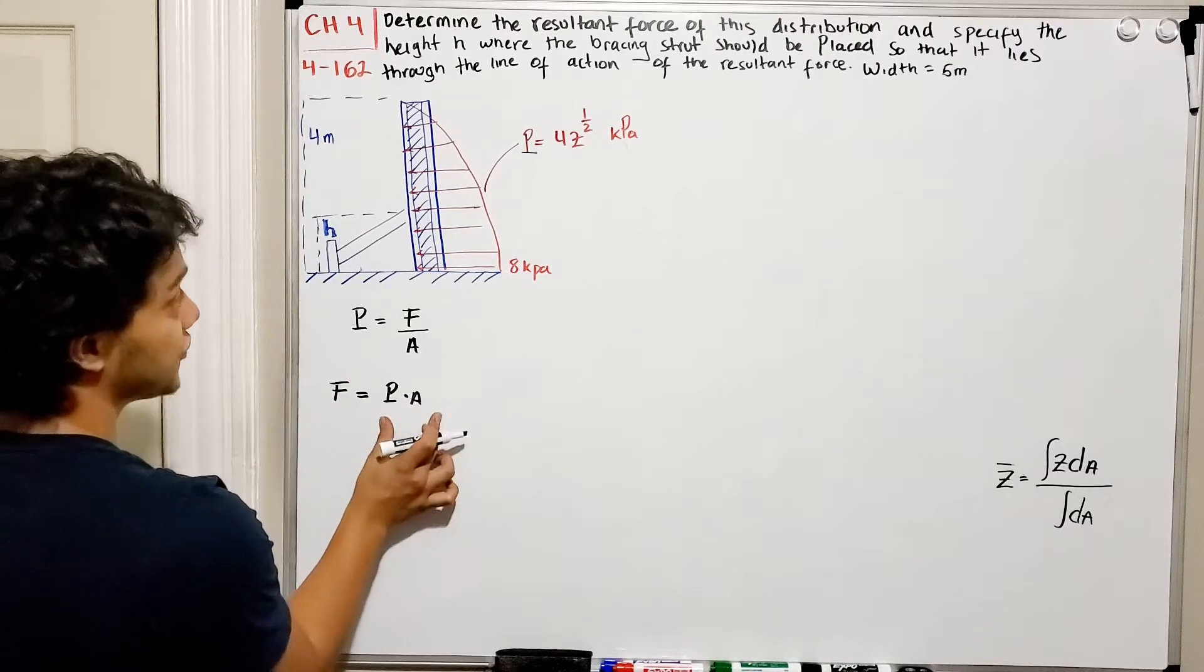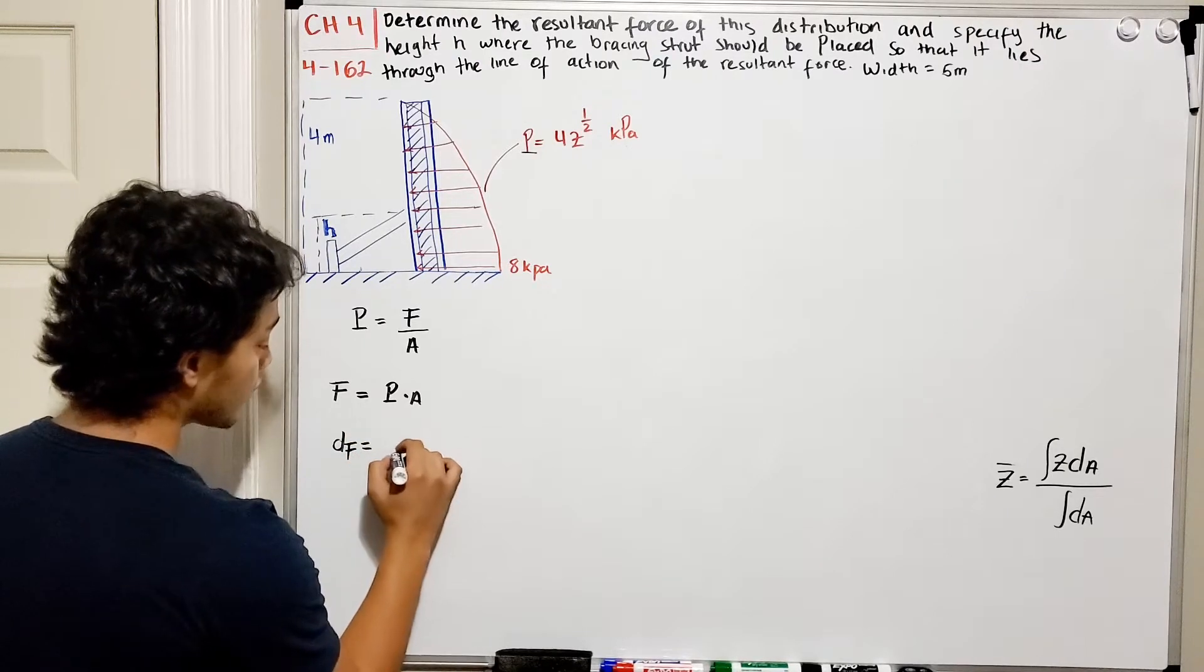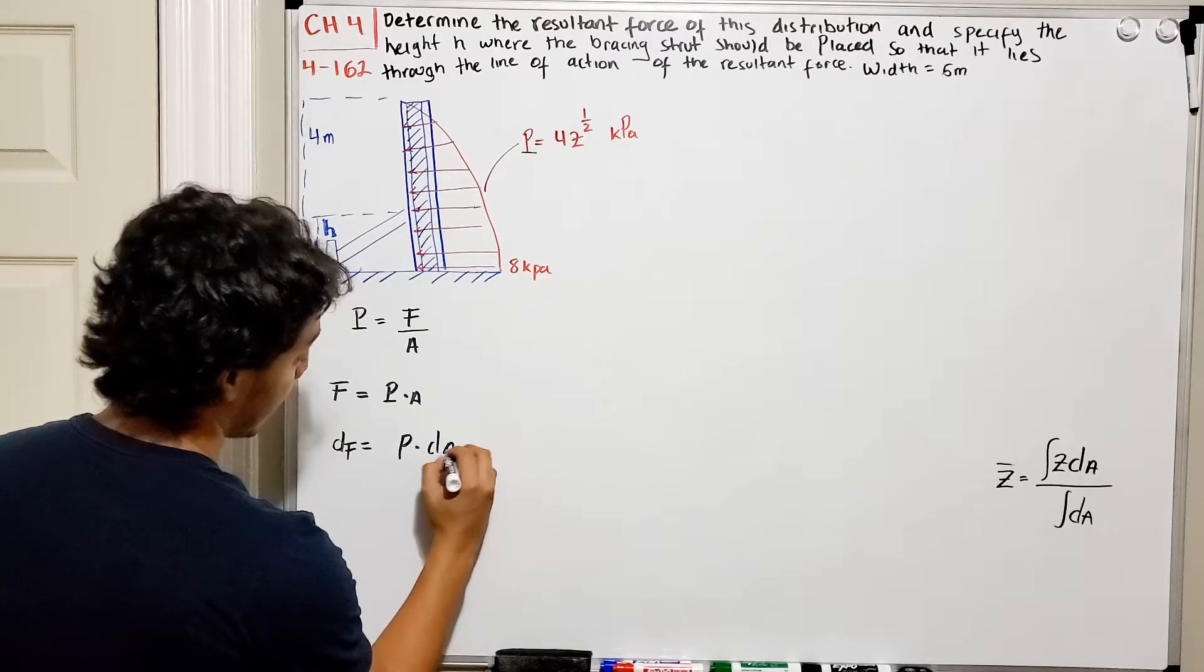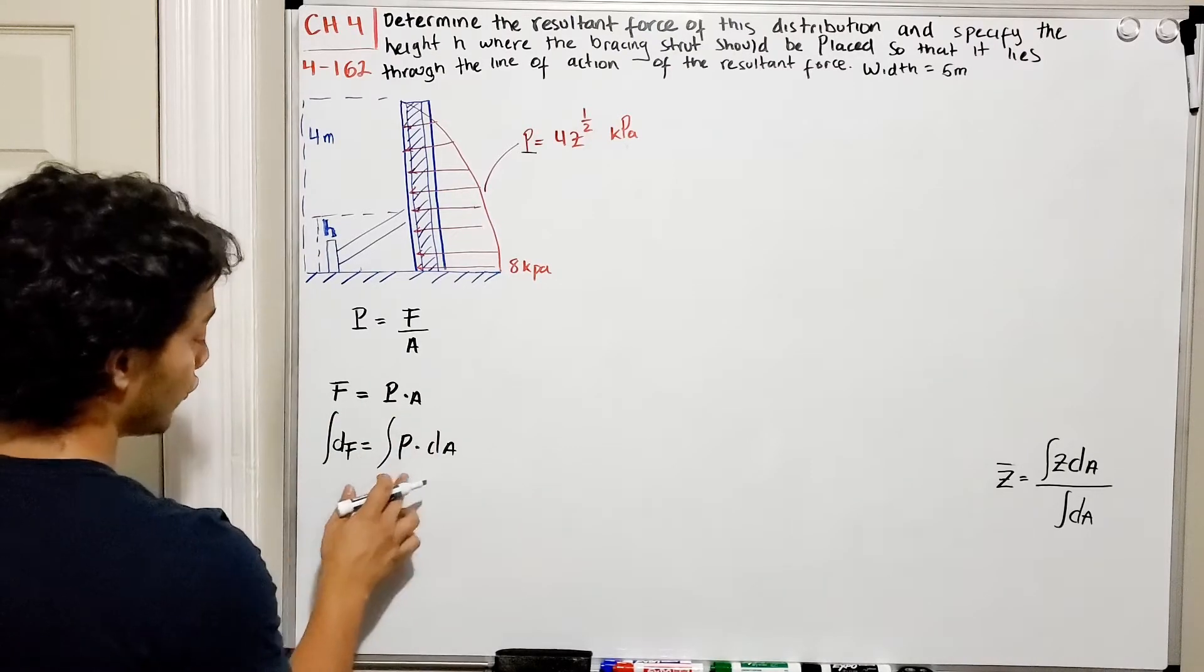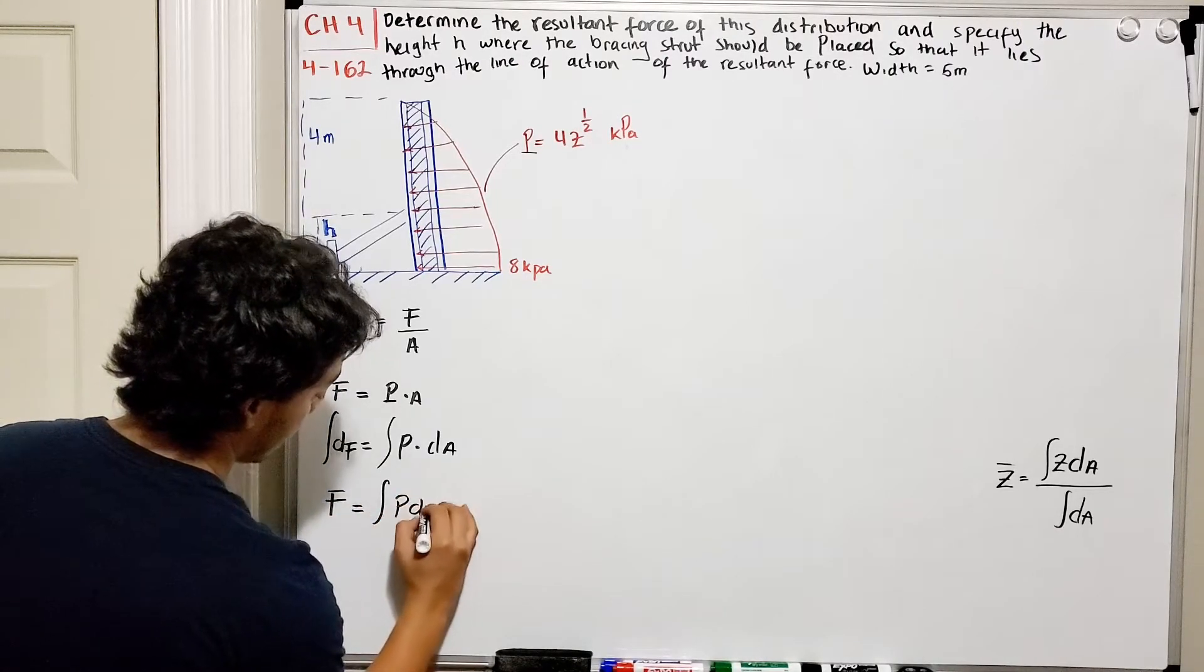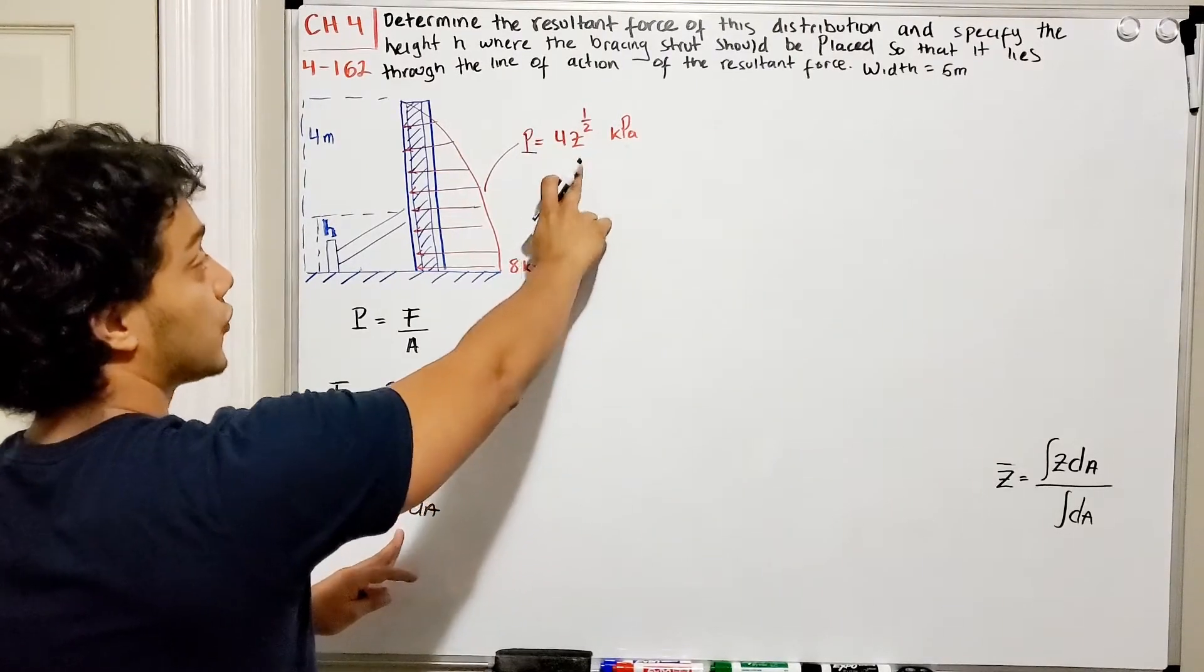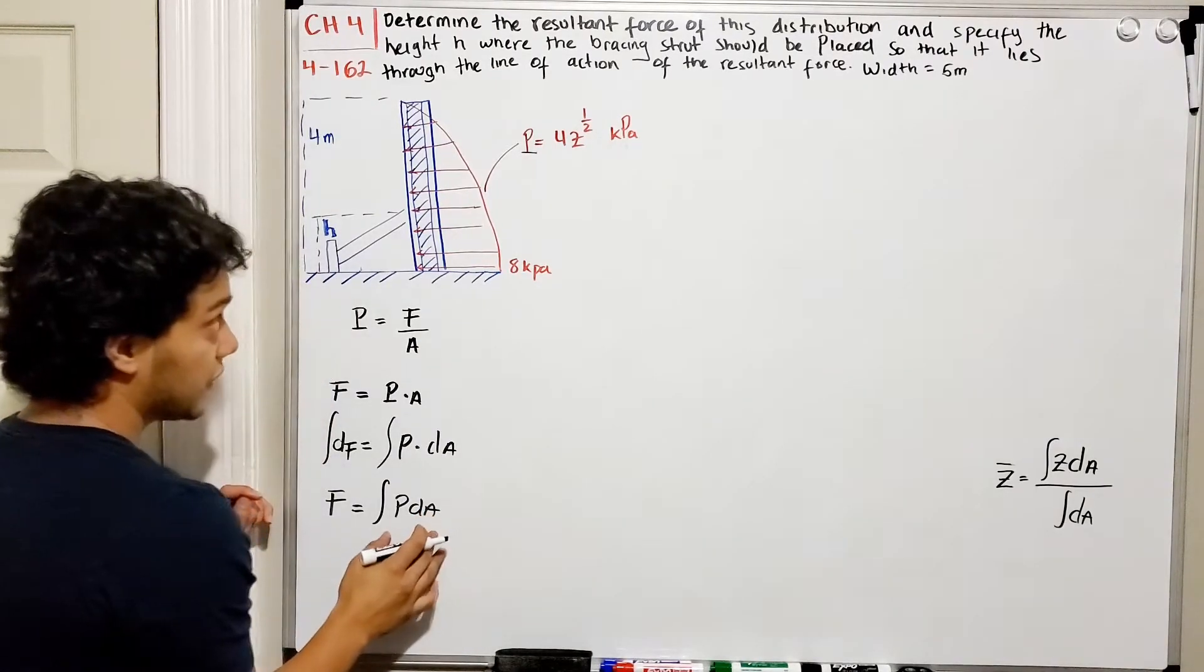This pressure is changing, so basically what we have is that our force changes with respect to the position, and we also have the change of my P, or my P into equation, times the change in my area. If I want to find the force, I need to do the integral on both sides, so I have that the force is going to be equal to the integral of P dA. Now, P we have it in terms of Z, so we got 4Z raised to the one-half. Somehow I need this dA to convert them into dZ.